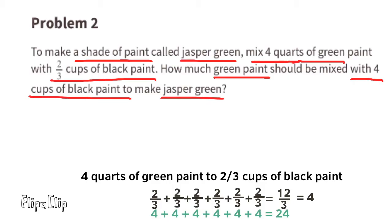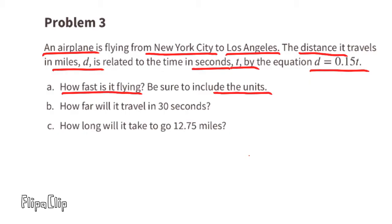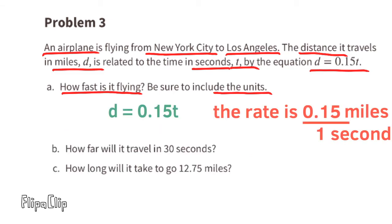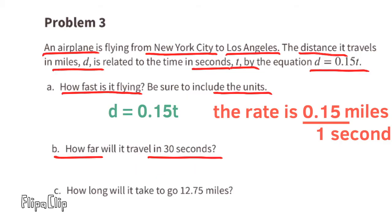Problem number three: an airplane is flying from New York City to Los Angeles. The distance it travels in miles d is related to the time in seconds t by the equation d equals 0.15t. Part a — how fast is it flying? Since time is in seconds, this plane is traveling at a speed of 0.15 miles per one second.